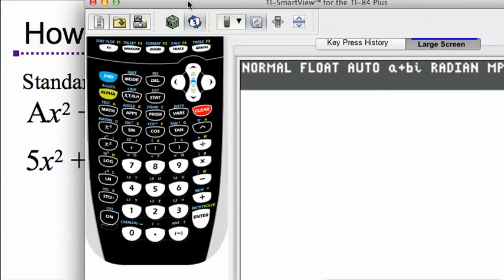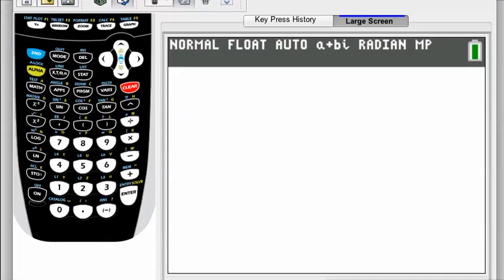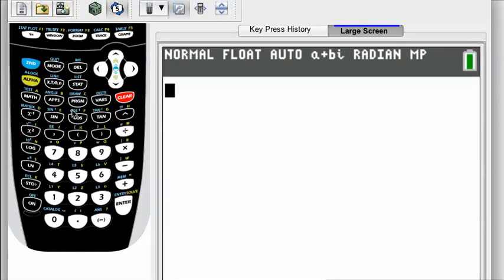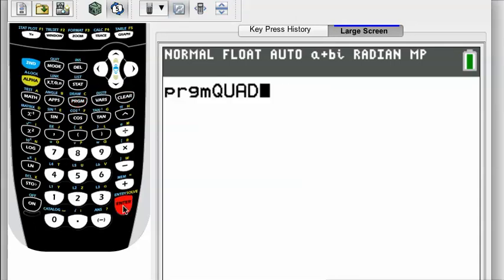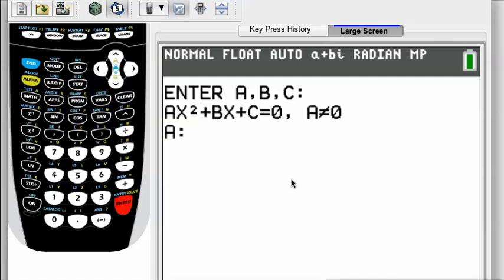And okay, so here is our calculator. Press the program key, and you'll find quad in there. Once you have it loaded in, press enter twice to execute it, and here we go. We're prompted to enter the coefficients. 5, 16, and the last one is negative 18.